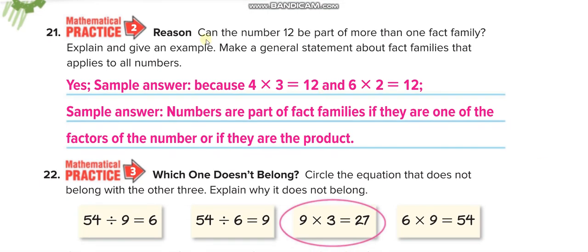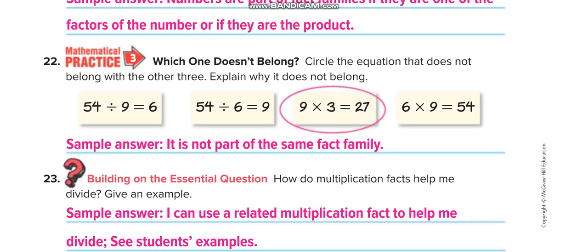Can the number 12 be part of more than one fact family? Yes — 4 times 3 is 12, and 6 times 2 is also 12, so we can make two separate fact families, each with four related sentences. Looking at a set of equations, three of them share the same numbers but one has different numbers, so that one is not part of the same fact family.